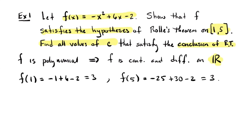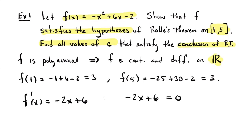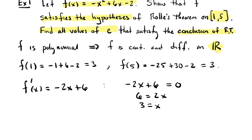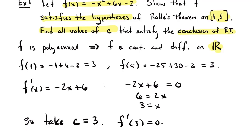The conclusion says the derivative should be zero somewhere. The derivative is f'(x) = -2x + 6 by the power, sum, and difference rules. Setting it equal to zero: -2x + 6 = 0, which gives x = 3. So the value of C is 3, and f'(3) = 0. It turns out there's exactly one value in this example.